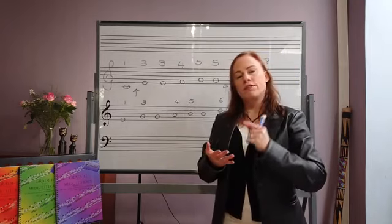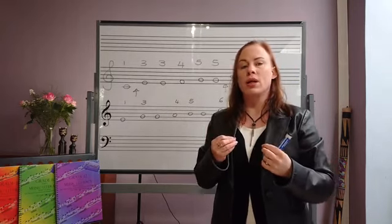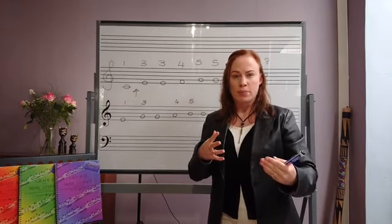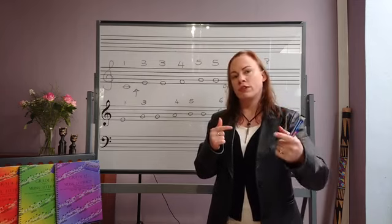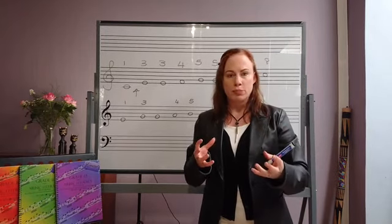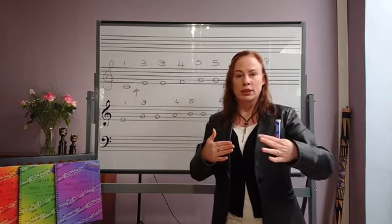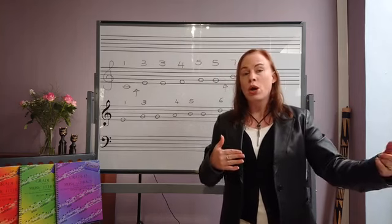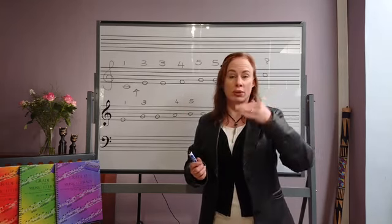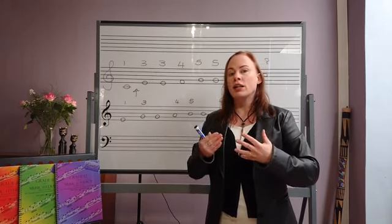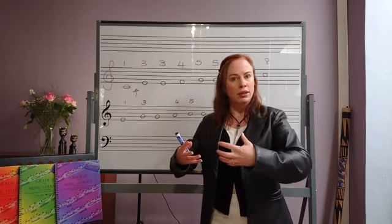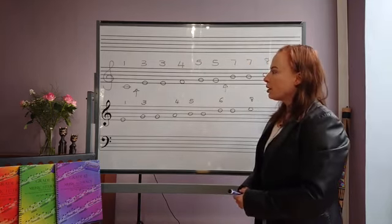So the basics: start on the first scale degree, omit the second, write three two times, have four, write five twice, skip six, then seven and eight. Now let's look at the scale degrees three, five, and seven that are written twice. In the blues scale we have blue notes — they call it the flattened, but it's more accurate to say the lowered third, fifth, and seventh scale degree. In a typical blues piece, you might have only the blue notes used, or a combination of the normal major scale degrees and the flattened notes.